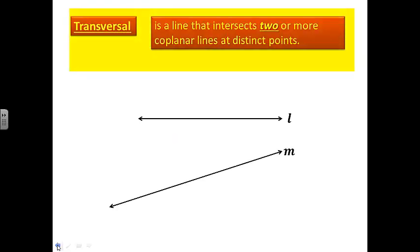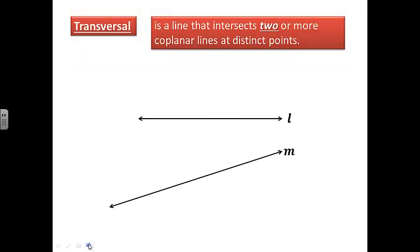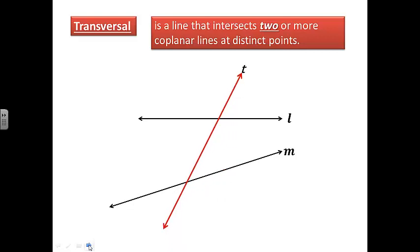Transversal — it is a line that intersects two or more coplanar lines at distinct points. Here we have line L and line M; they are clearly coplanar. A transversal would be this line in red, line T. It is intersecting two or more lines at distinct points — at this point here and this point here. This red line is the perfect example of a transversal.